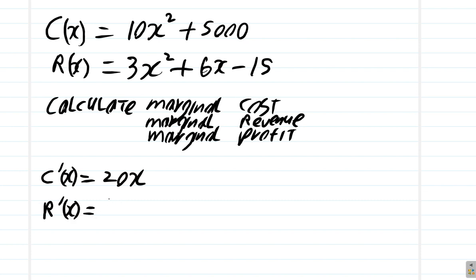Concerning the revenue, the marginal revenue R prime of x would be 6x plus 6. So that's the marginal cost and the marginal revenue. What about the marginal profit?